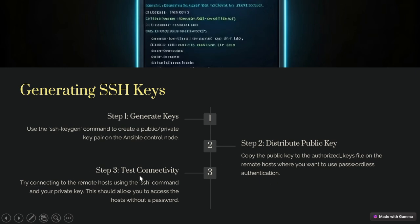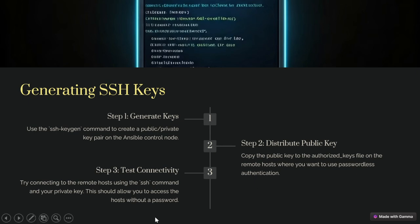Another step is to test the connectivity. Try to connect to the remote host using the SSH command and your private key. This should allow you to access the host without a password. We can test connectivity using SSH with the host's private IP, using the private key which we have entered in the SSH authorized keys file.